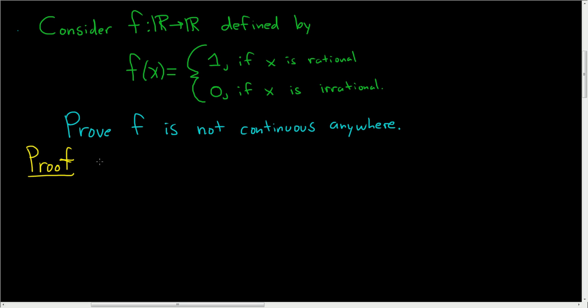Suppose f is continuous at a. And a here is just some real number. So if we can prove that we have a contradiction, then we're done and we've shown that it can't be continuous anywhere.